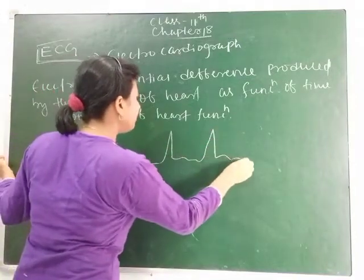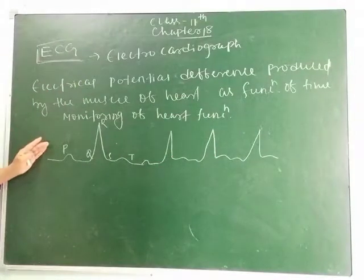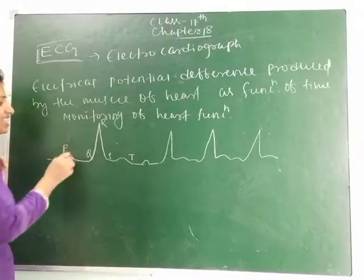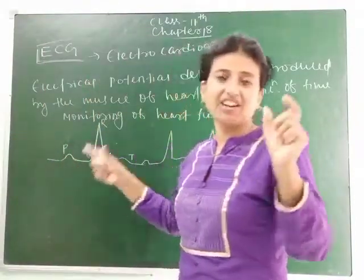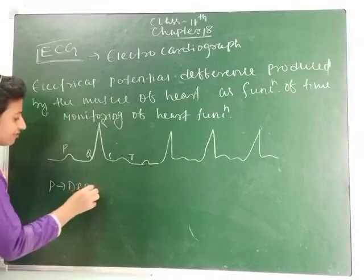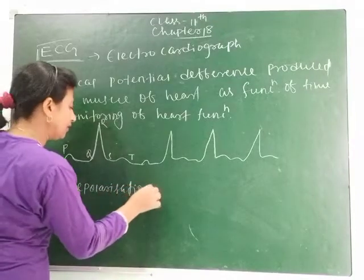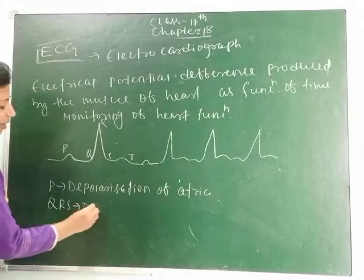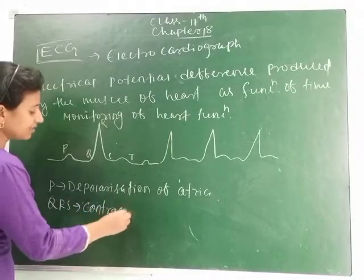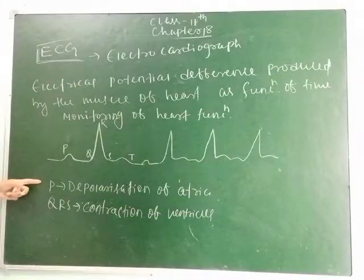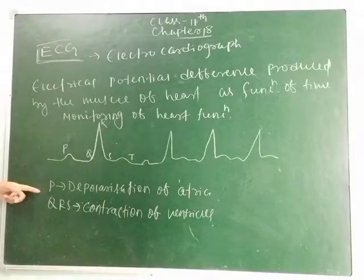Many such structures are formed per minute. Let's understand which portion of the graph represents what. From the P region, depolarization starts. P represents the depolarization of atria. QRS represents the depolarization and contraction of ventricles.